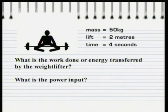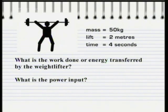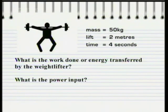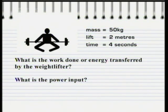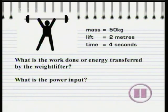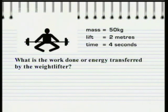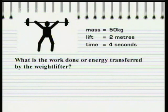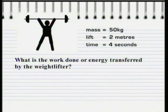If our weightlifter lifts a mass of 50 kilograms, 2 metres off the ground in 4 seconds, what is the work done or energy transferred by the weightlifter, and what is the power input? The first part of the question asks for the work done or energy transferred by the weightlifter. That's the force applied times the distance lifted.